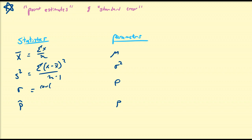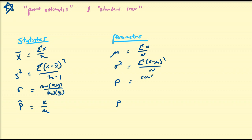r is calculated by doing the sample covariance of the two data sets x and y, divided by the product of the standard deviations of x and y. And p-hat is approximated by k divided by n, the number of successes in a sample of size n. These are approximations for: the sum of x values divided by capital N; the sum of (x minus mu) squared divided by capital N; the covariance between x and y divided by the product of sigma x and sigma y; and p, taken as k divided by capital N, where k is the number of successes in the population.